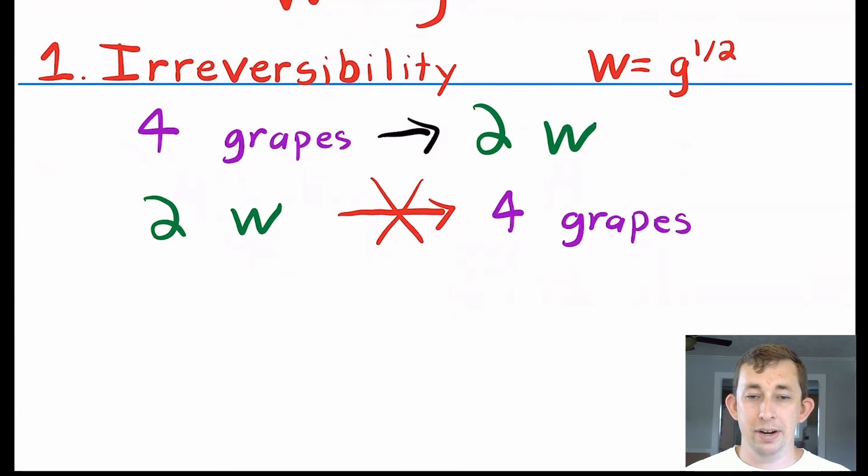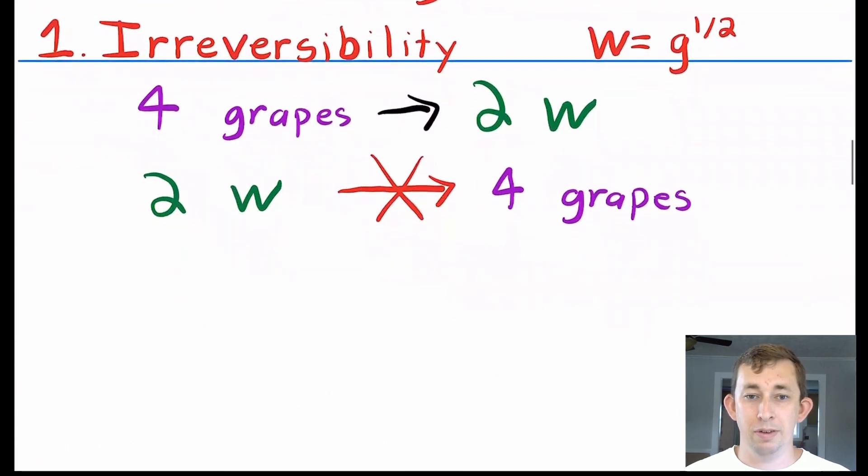The first property of production functions that we're going to talk about is irreversibility, which just means that you can't switch the number of inputs and outputs and expect it to go the same way. This is equivalent to saying if you put something in a machine and it comes out the other side differently, you can't put that output right back into the machine and have the inputs come out and be exactly where you started before.